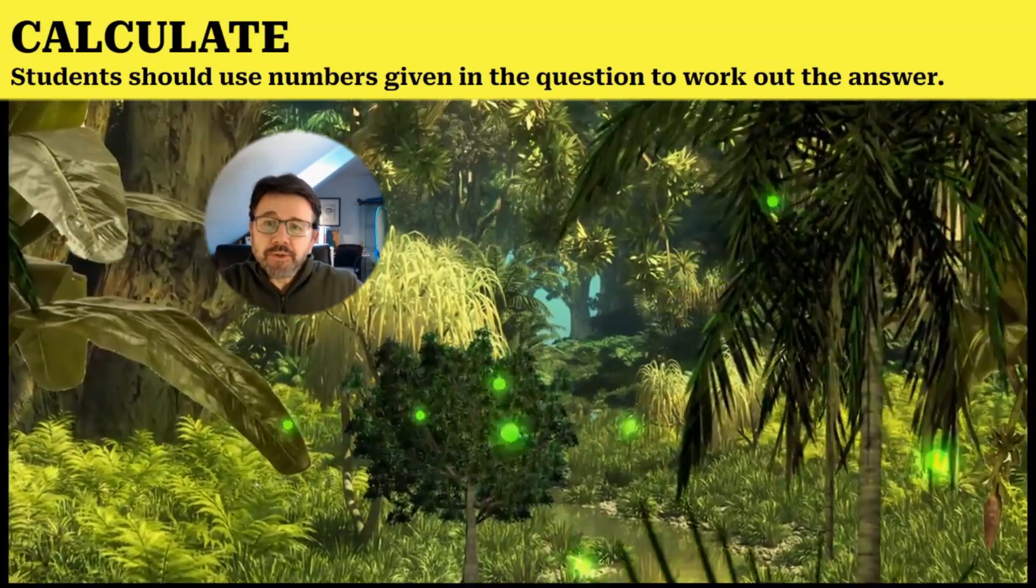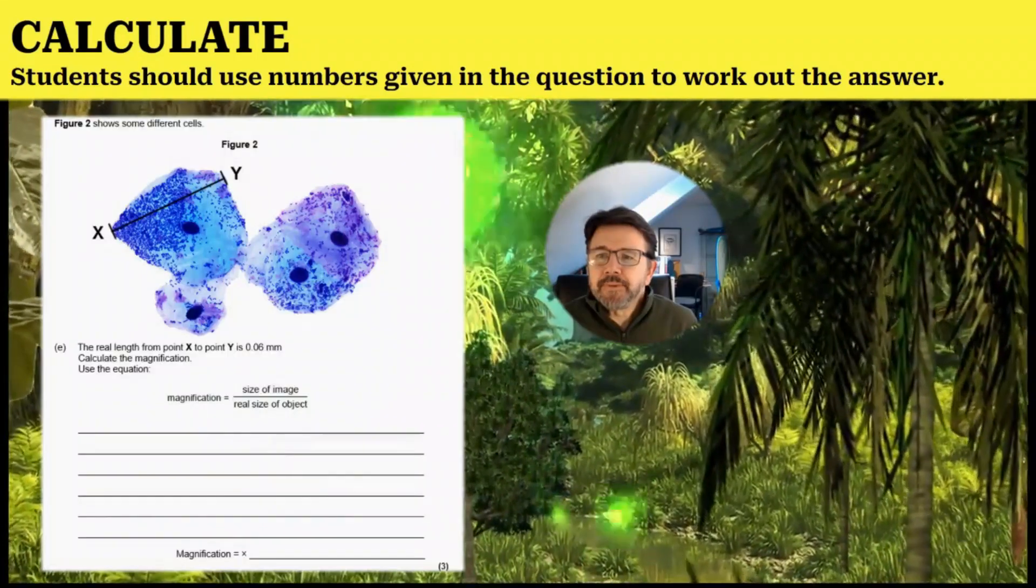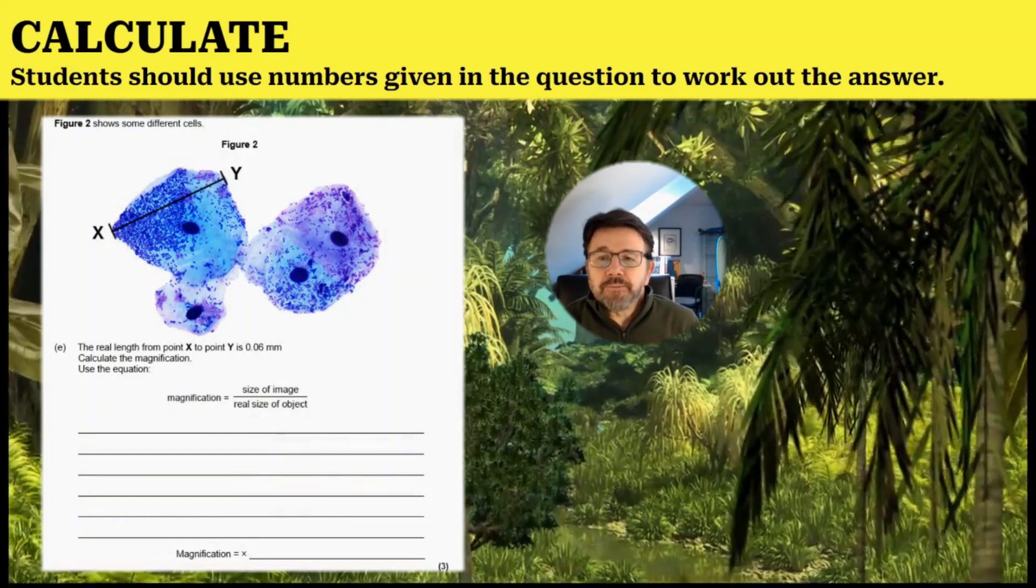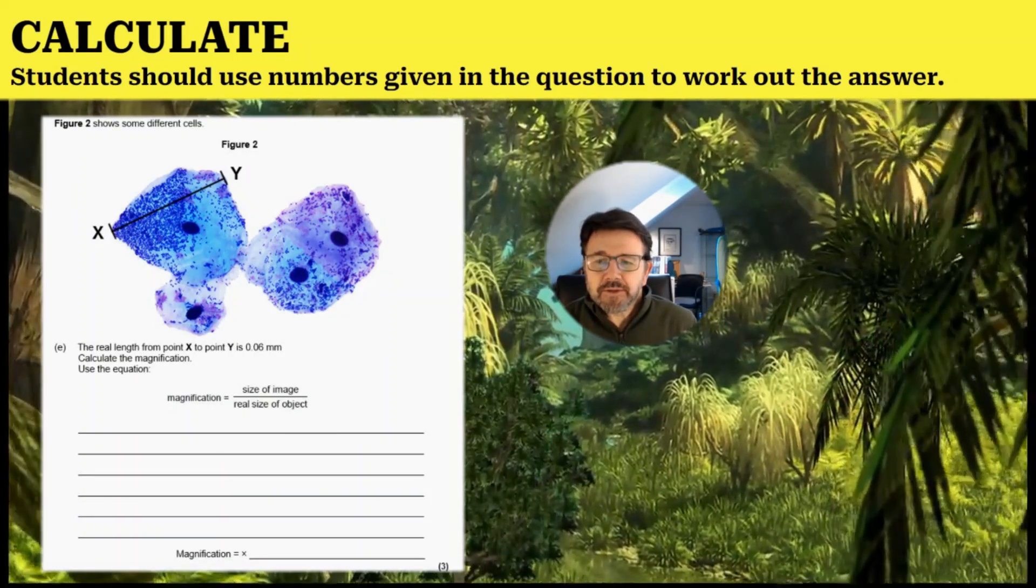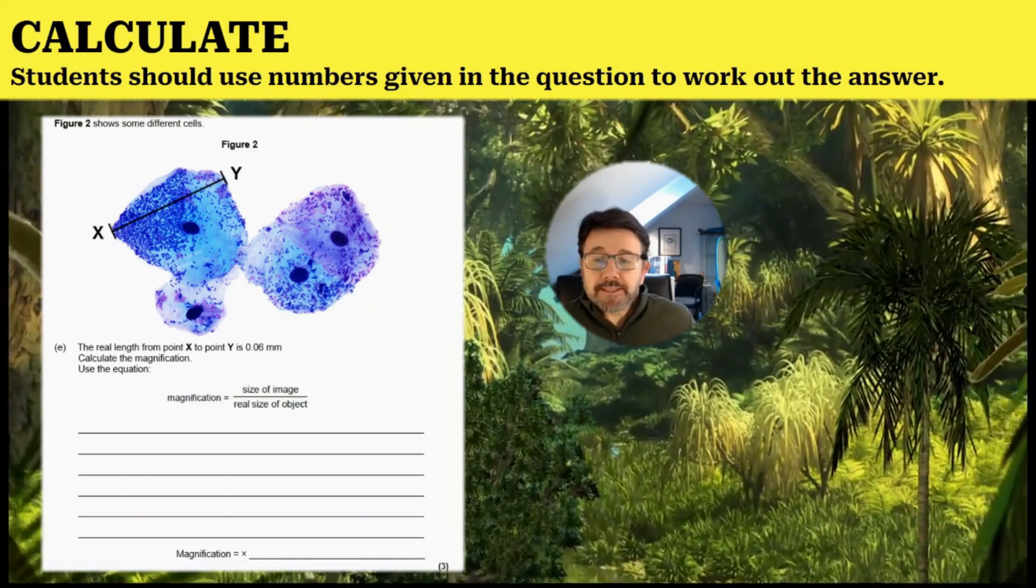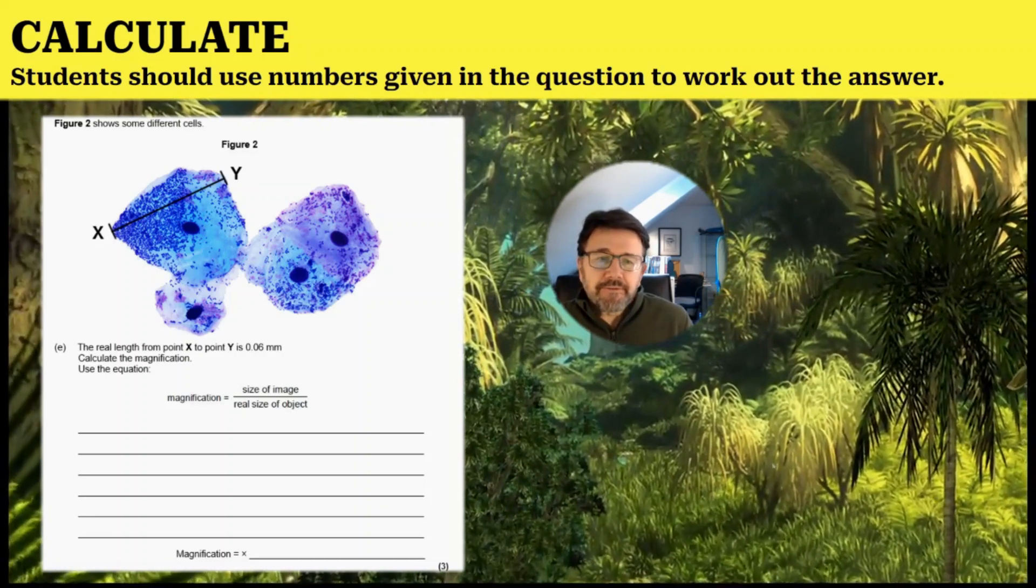You're also going to have to show your working. This question is from cell biology. You can see it shows you a cell and asks you to calculate the magnification. The first thing you're going to need to do is get a ruler.